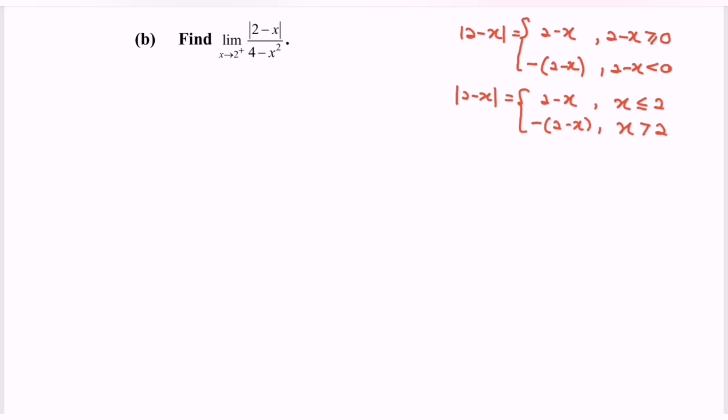Rewrite the situation where we have 2 for the left hand side, which is x less than or equals to 2. So the function would be 2 minus x. For the right hand side where we have x greater than 2, we will have the function negative bracket 2 minus x.